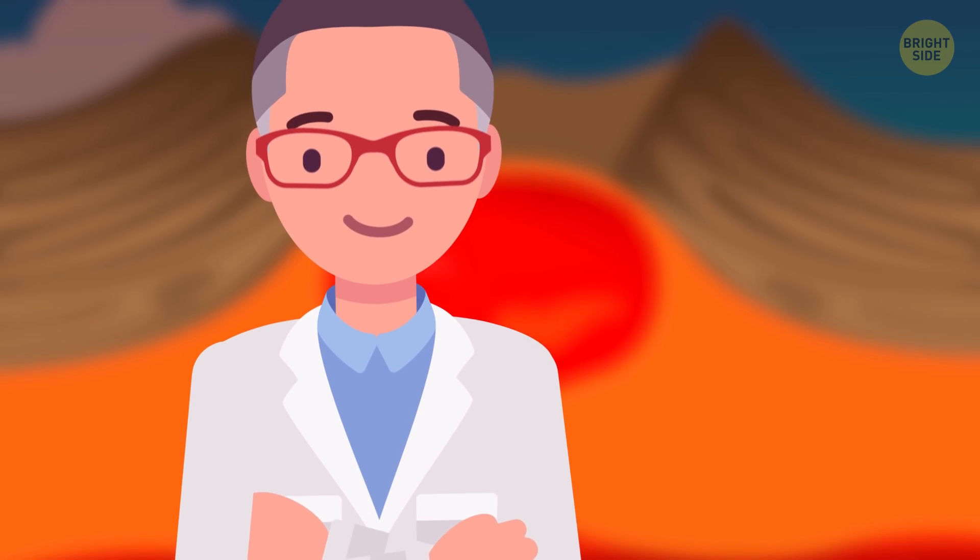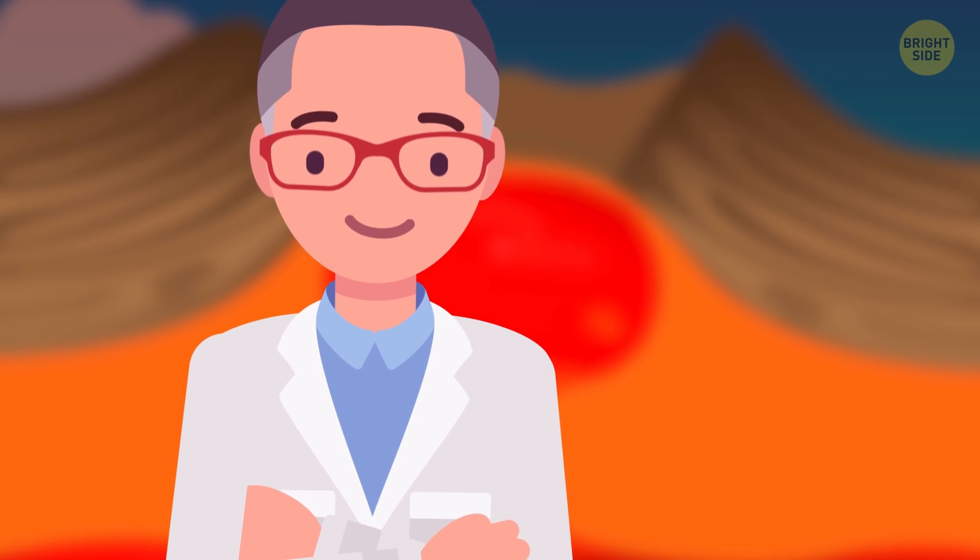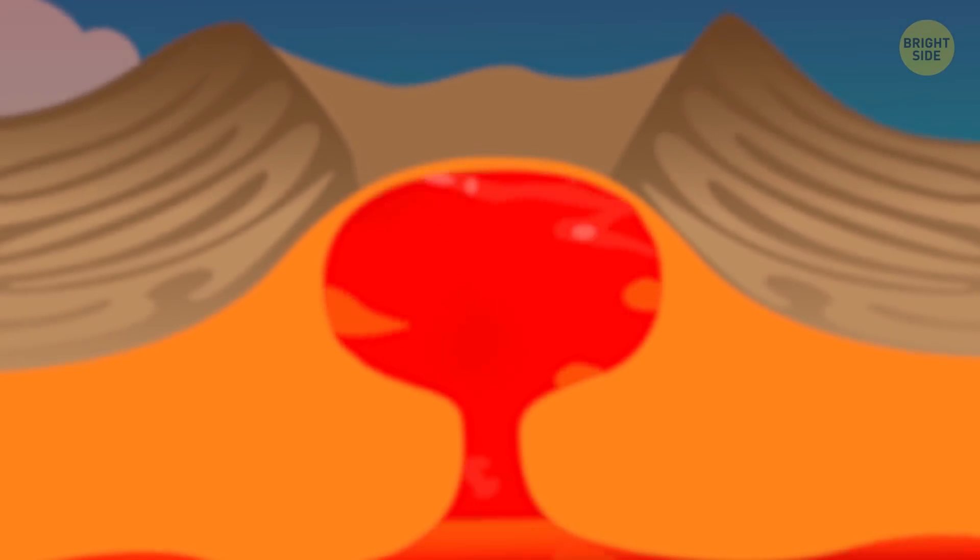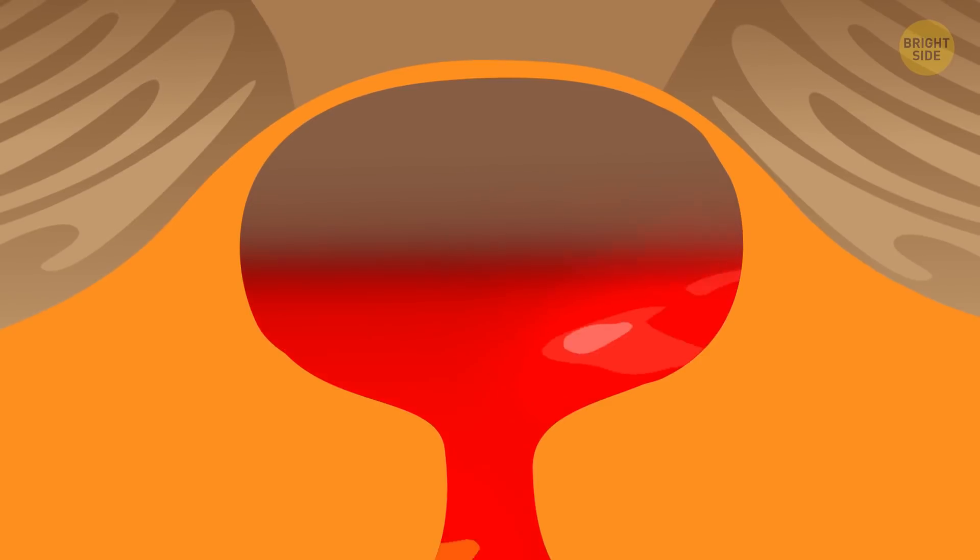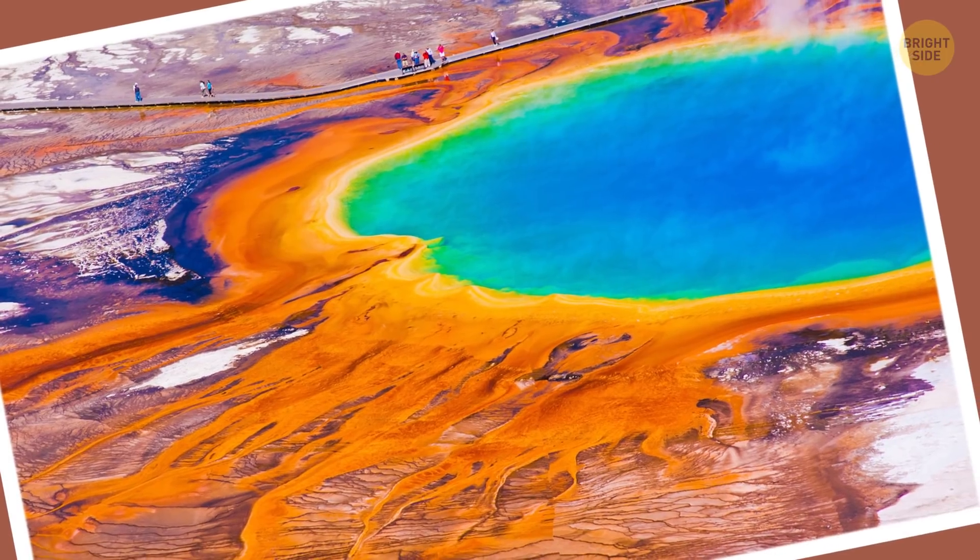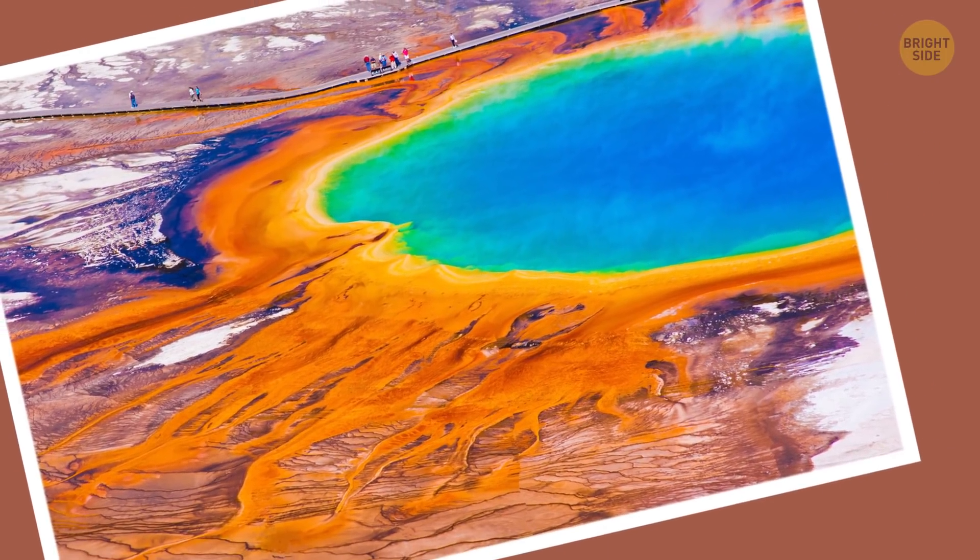Anyway, scientists are sure that Yellowstone doesn't present any danger these days. For an eruption to happen, magma inside has to be at least 50% molten. With Yellowstone, this number is just 5 to 15%. But of course, Yellowstone isn't the only supervolcano on our planet.